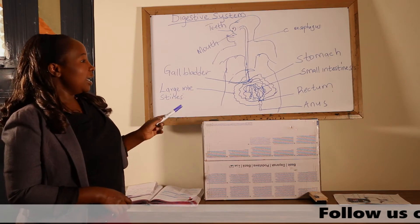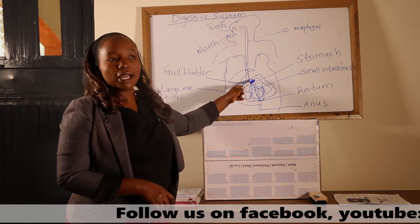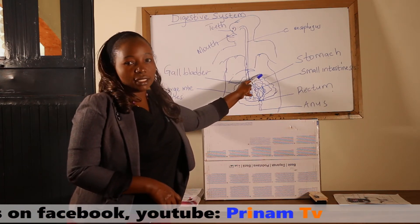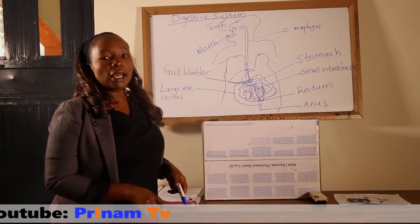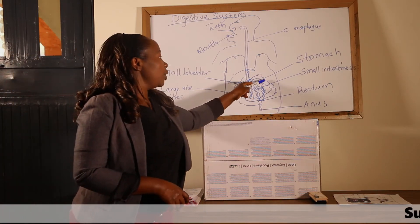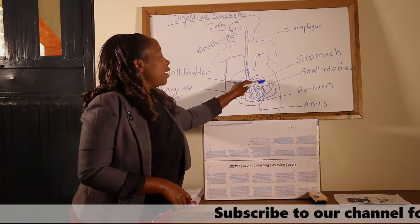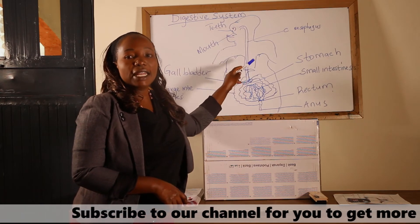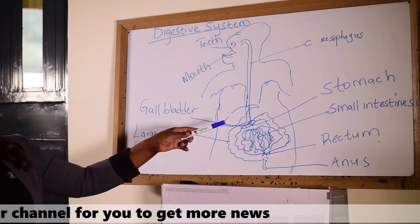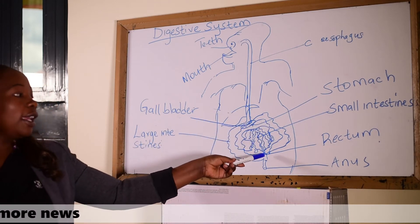Remember, in the large intestines there is no digestion that takes place. What happens in the large intestines is just the absorption of water and mineral salts. After that absorption, the remaining food is now the undigested or unwanted food in the body, which is then pushed further into the rectum.